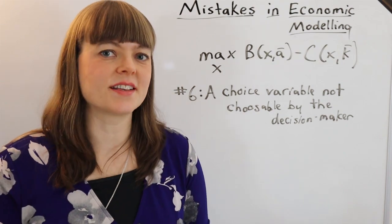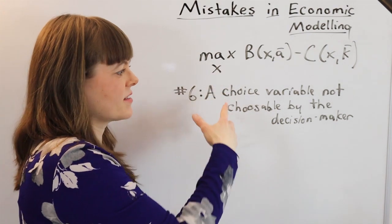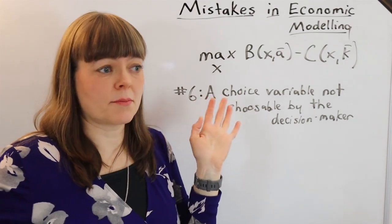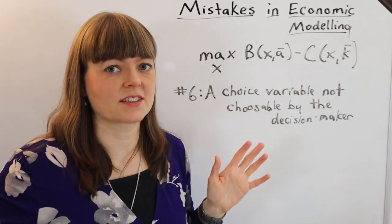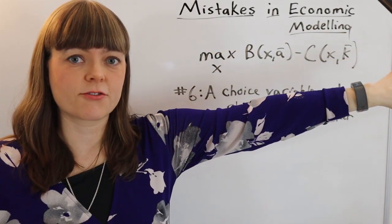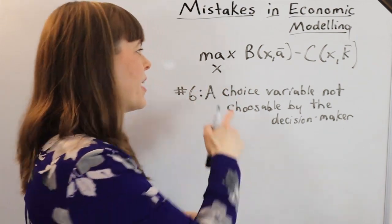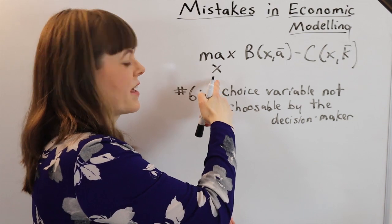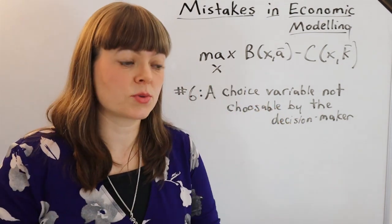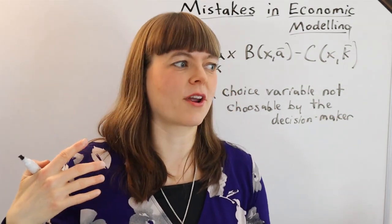Now the sixth mistake I see commonly in student models is that they have a choice variable that's not something the decision maker that they're modeling can actually choose. And sometimes it's something that nobody actually gets to choose. So when you're building a model, make sure you think about whose perspective is this from, whose decision is the choice variable. So the most common choice variable I see that fits this mistake category is like voter turnout, where there's no individual that actually chooses voter turnout.